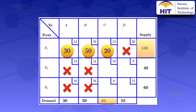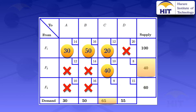Since we can no longer allocate in row F1, we move to cell F2→C. The supply for F2 is 40. For the demand, column C shows 65, but we've already allocated 20 there, so the remaining demand is 65 minus 20, which is 45. We take the minimum of 45 and 40, which is 40, and allocate 40 units. This reaches the supply capacity for F2, so we cross out row F2.